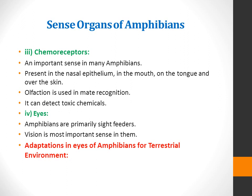Now we will discuss the chemoreceptors of amphibians. A chemoreceptor, also known as a chemosensor, is a specialized sensory receptor cell which transduces or converts a chemical substance — endogenous or exogenous — and generates a biological signal.